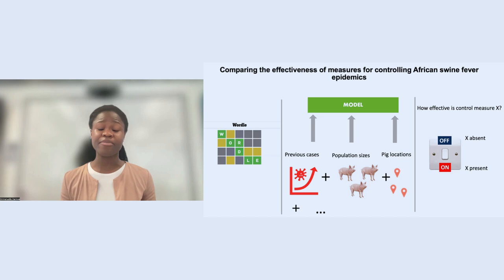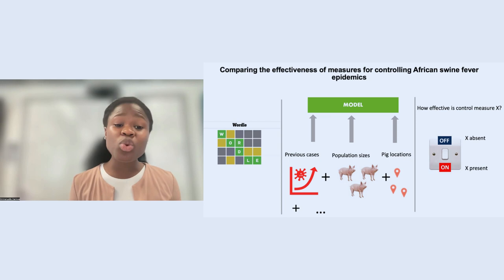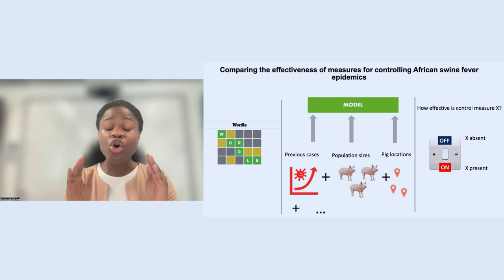Moved by the negative effects of ASF epidemics, my research team and I participated in a guest challenge, much like Wordle, in which teams had the task of using mathematical principles to guess which control measure among a selection of measures would be the most effective for controlling an ASF epidemic in Europe.